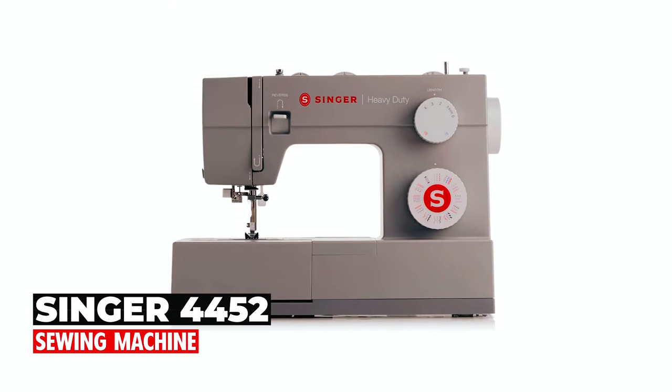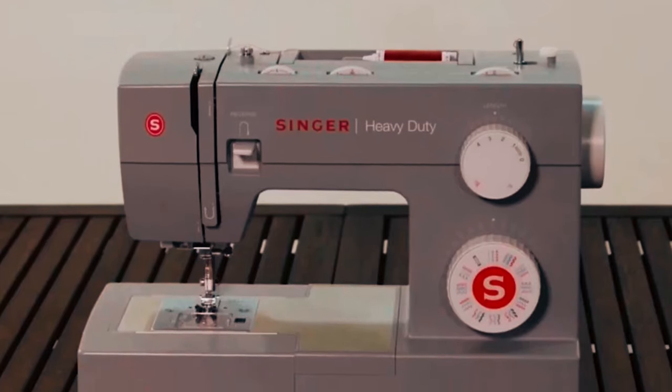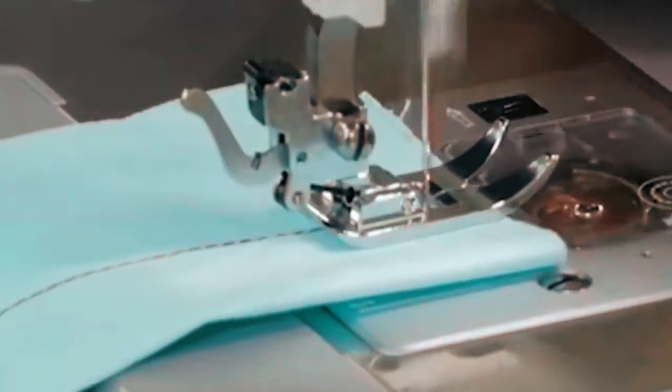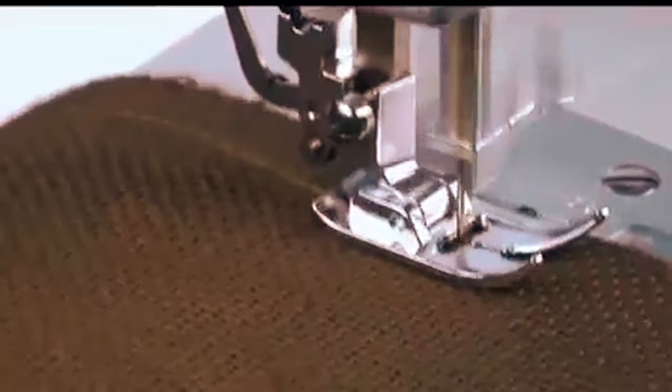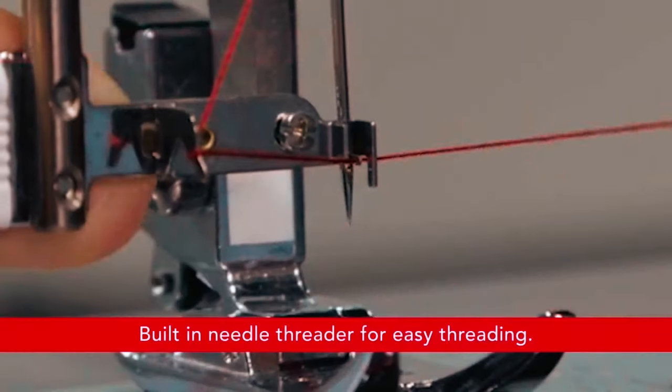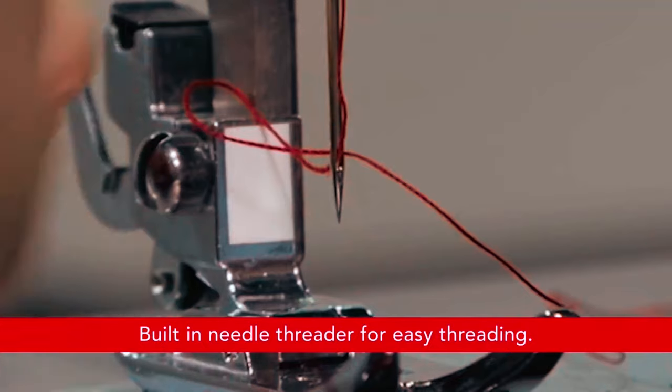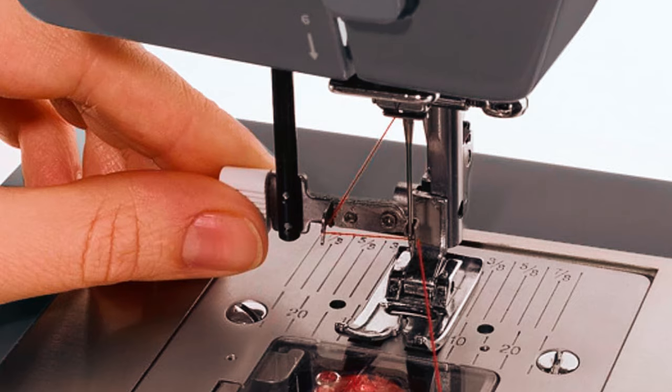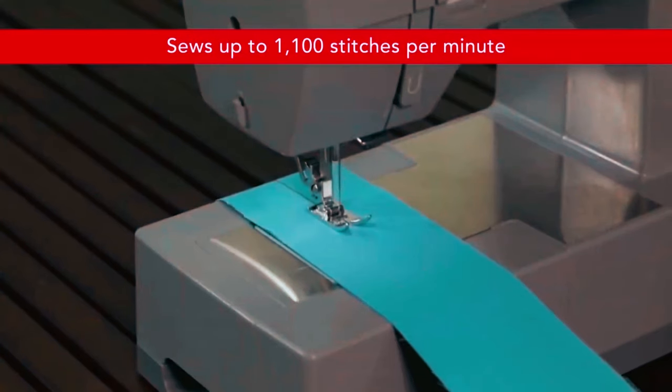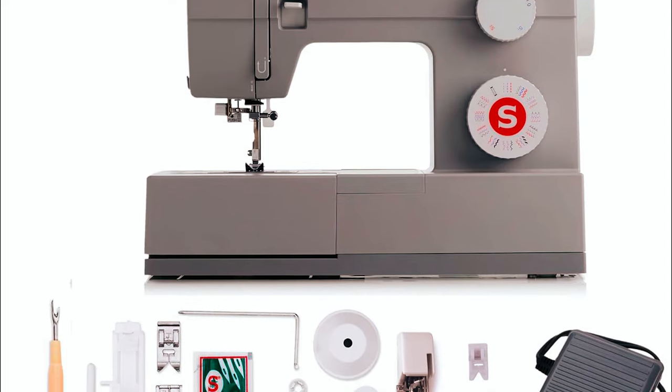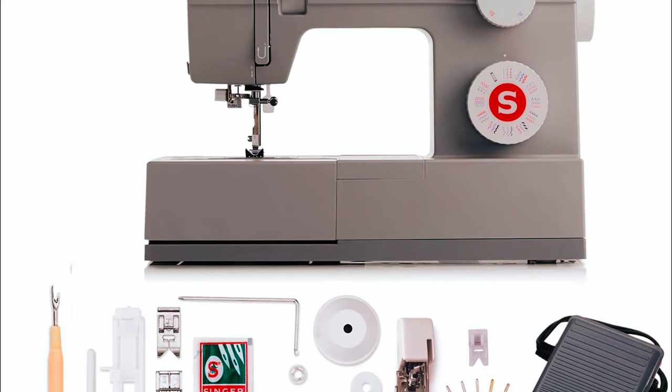Singer 4452 sewing machine. This highly sophisticated heavy-duty sewing machine comes with 32 built-in stitches: 6 basic, 7 stretch, 18 decorative, and a fully automatic one-step buttonhole. It is equipped with an automatic needle threader making it extremely easy to thread the eye of the needle without strain or frustration. With a maximum sewing speed of 1,100 stitches per minute, this machine is designed to sew through heavyweight fabrics with ease.